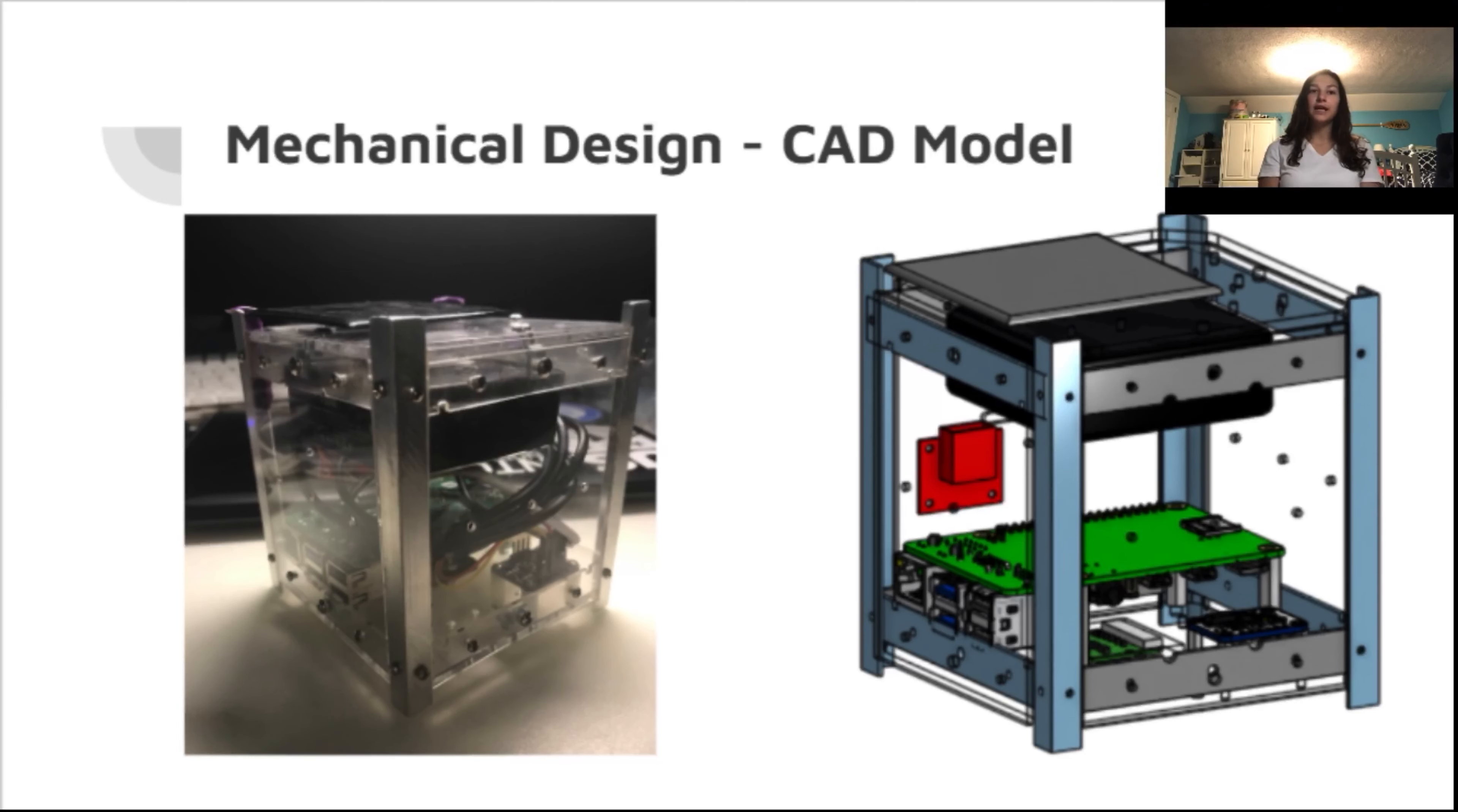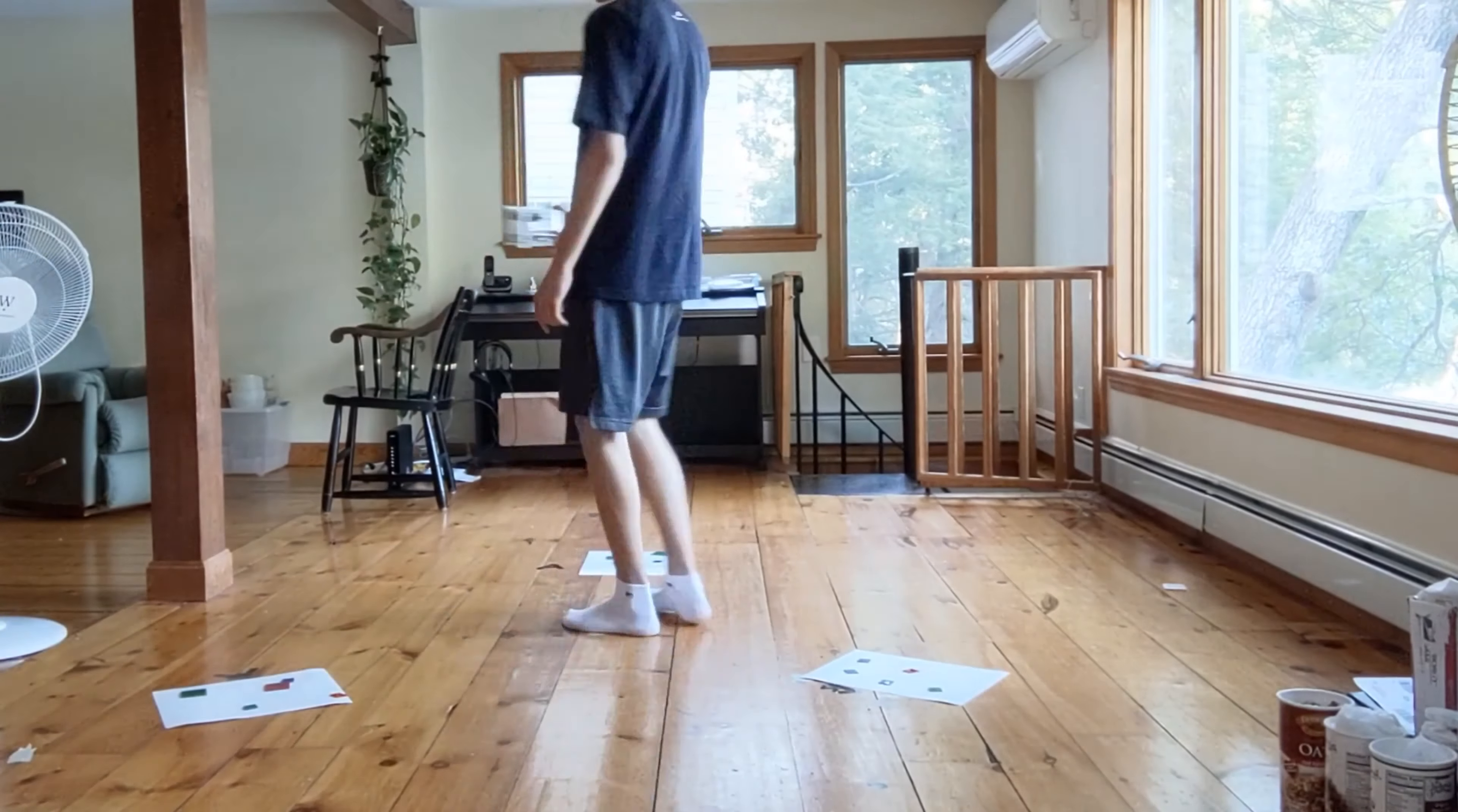We created a computer-aided design to model the CubeSat. As seen, we placed the camera at the bottom of the CubeSat so we could effectively take pictures of each poster board. Additionally, the Raspberry Pi was flipped upside down to accommodate the cabling, and the battery is at the top in order to easily plug in and see the percentages. During our flight, we orbited around the poster board 10 times, as shown.